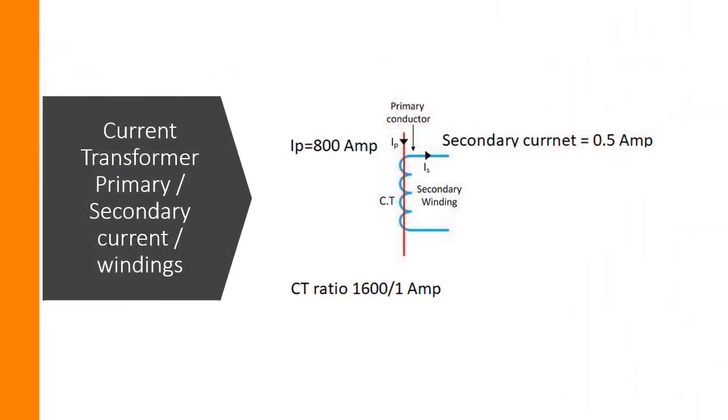Welcome back. In this section, we will see and study the current transformers' theory. You can see in this picture this is basically the current transformer symbol. Primary current is the current that goes through the conductor. Secondary current is from the secondary windings. In this example, this is a 1600 to 1 ampere CT. If the primary side has 1600 ampere current, there will be 1 ampere secondary current.